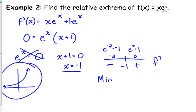So we have a minimum at negative 1. I do want to know the y value. So what do I plug that into? The original. Negative 1 e to the negative 1. So that's negative 1 over e. We have a minimum at negative 1, negative 1 over e.